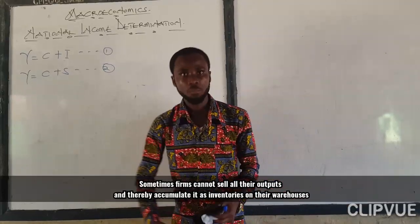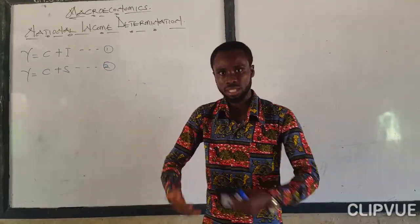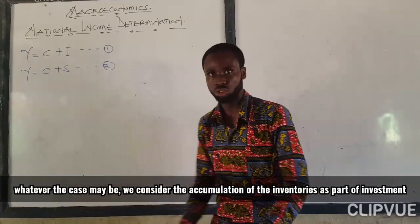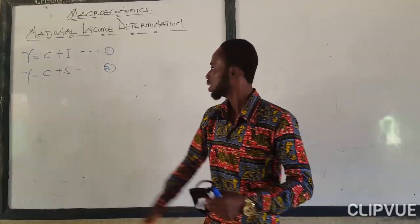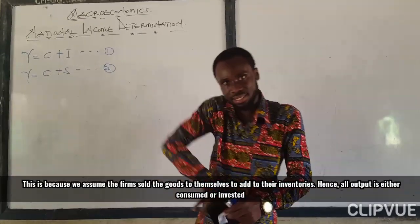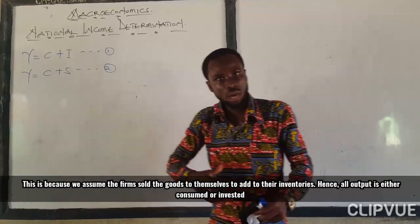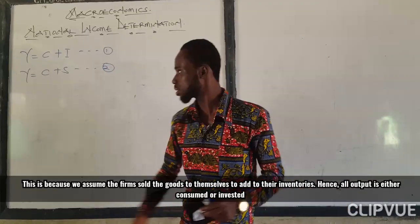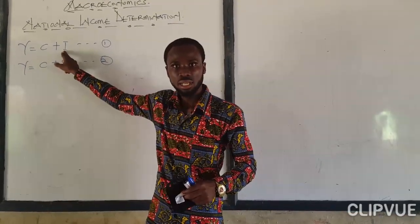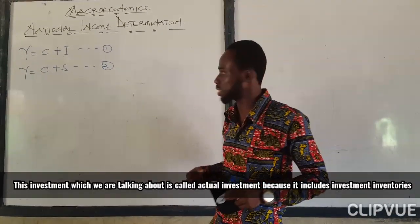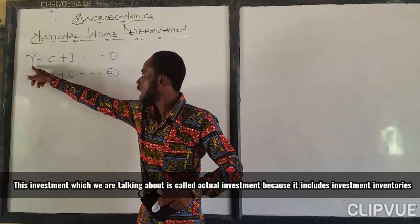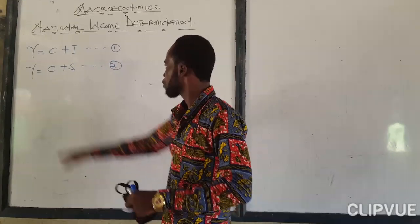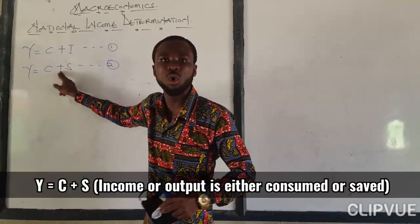Like physical investment. Or if a firm produces commodities, it's either the firm consumes it or they sell it to their customers. The part that they couldn't sell, the firm buys it. And if the firm accumulates inventory, we are saying that the firm is buying the inventory — this becomes unwanted inventory. If the firm buys it, it becomes an investment for the firm itself. So output is either consumed or invested. Similarly, income is either consumed or saved.